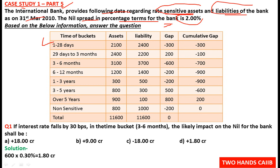We have done some questions like this in Part 4, so we already understand the different time buckets. There are sensitive and non-sensitive asset data given in total. Assets and liabilities are shown, and to calculate the gap: gap equals assets minus liabilities. For example, 2100 minus 2400 equals minus 300. The cumulative gap column is also provided in the table itself, so you need not worry about calculating it.